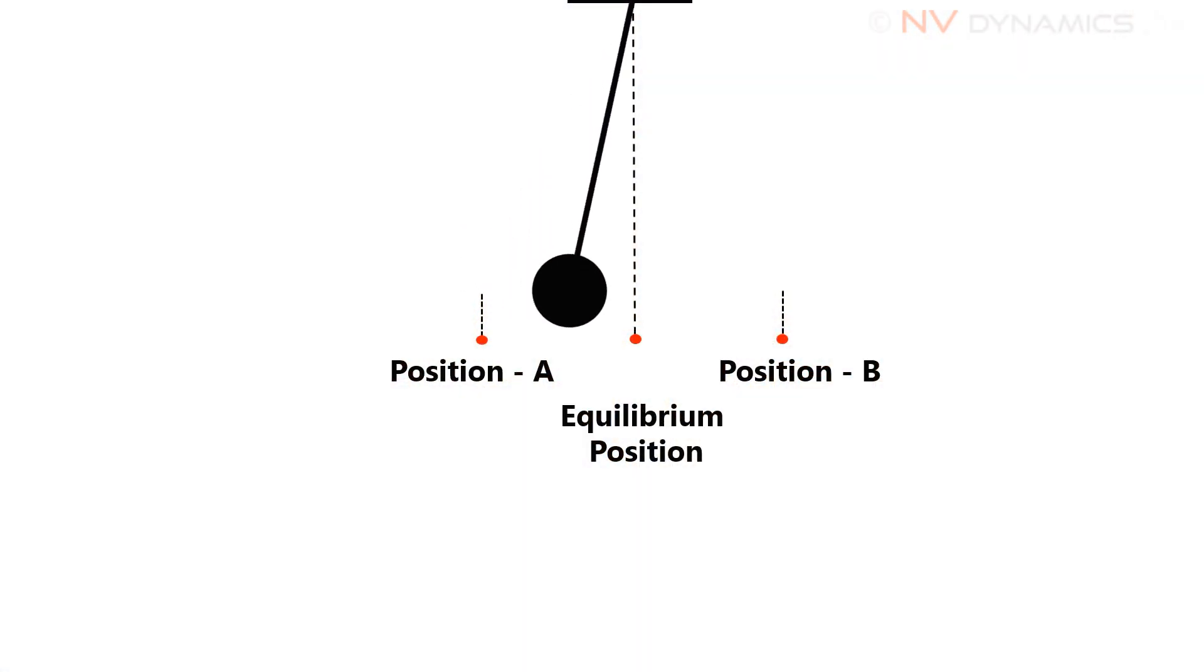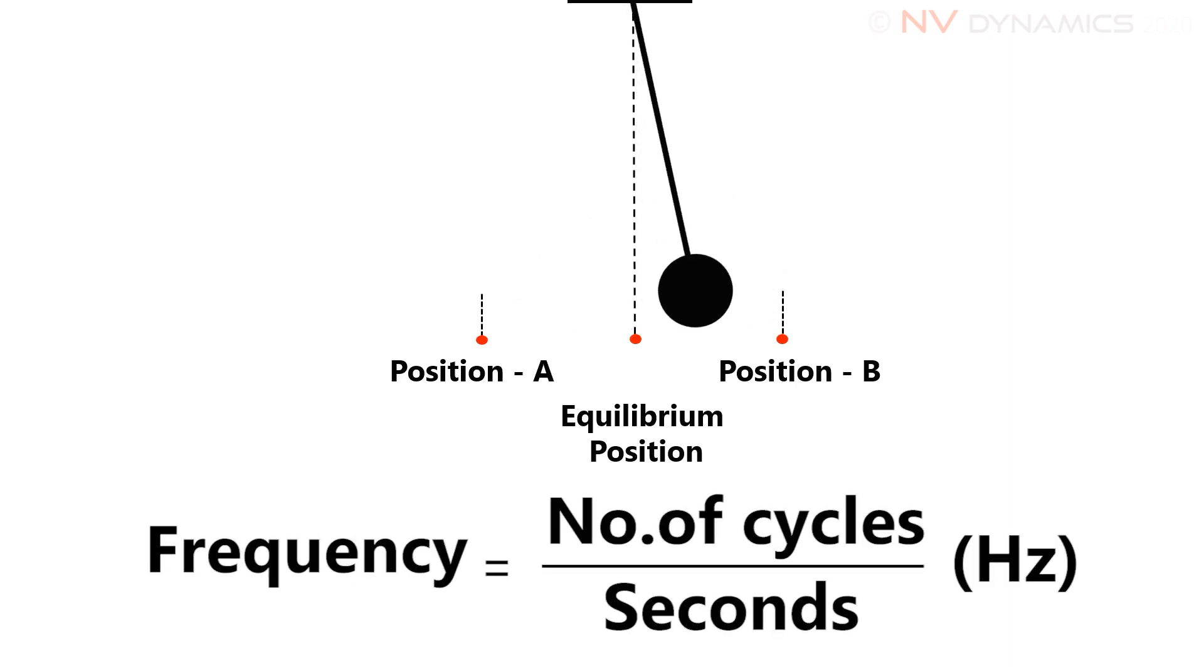A simple example of a pendulum explains the basic definitions we discussed about displacement, velocity, and acceleration, and also connects better with the relationship of frequency and phase. Frequency typically represents the number of cyclic movements an object makes with respect to its equilibrium position, and this is represented as cycles per second or hertz.